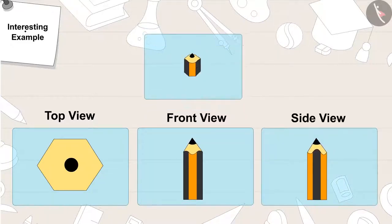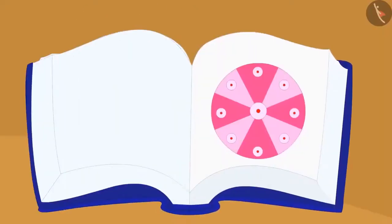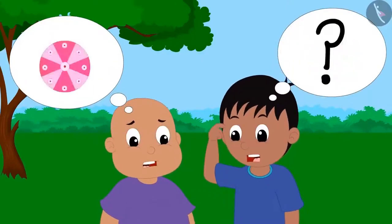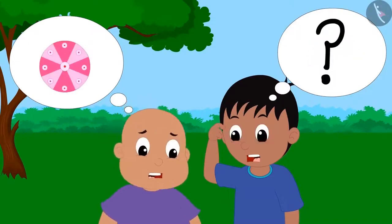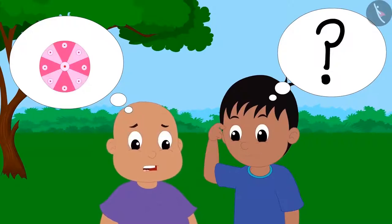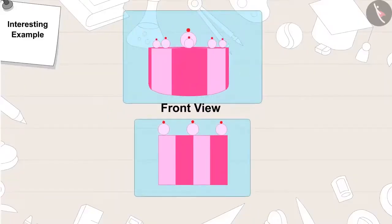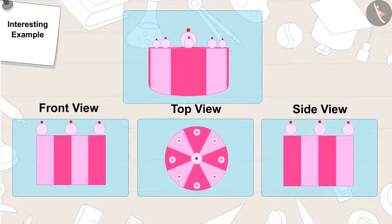Gaggoo then told Raju and Bablu, this is the next picture. Gaggoo turned the page and said, can you help Raju and Bablu to identify the object? Think, think. Raju and Bablu still couldn't identify the object in the picture. This is a cake. A cake looks like this in front view. From above — in top view — it looks like this. And in side view, it looks like this.